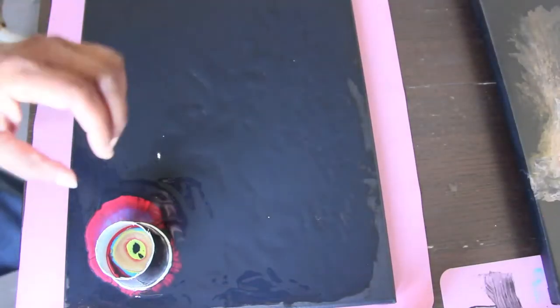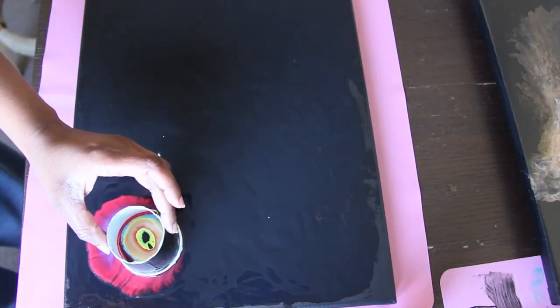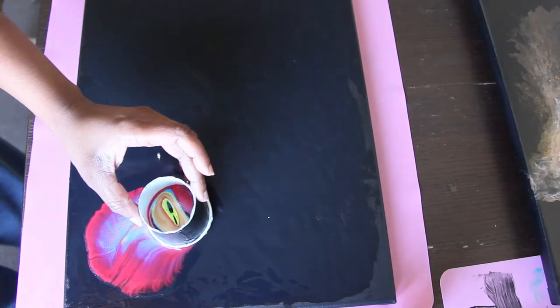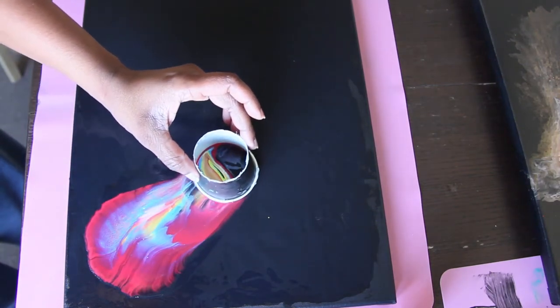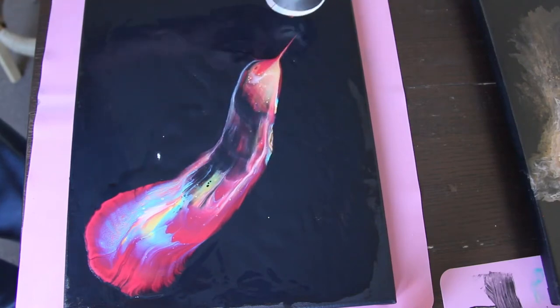So now I'm ready to drag the cup. I'm gonna drag it kind of on a diagonal angle across the canvas and I'm doing that really slowly taking the paint along with the cup and I'm done.